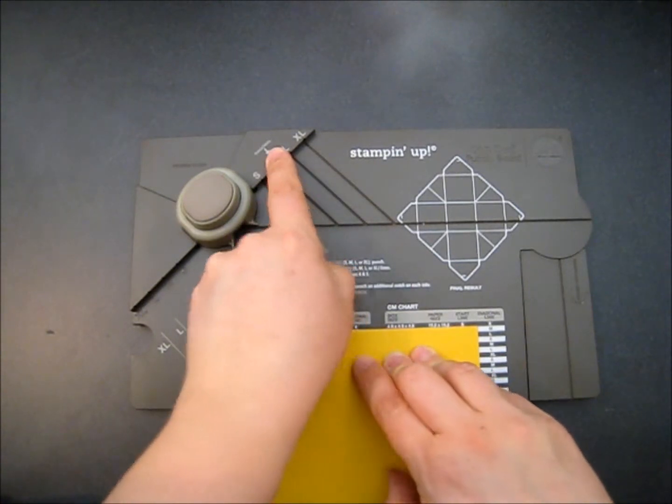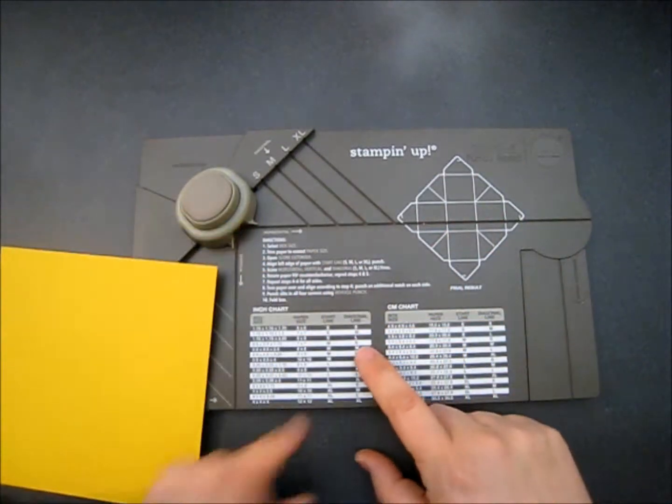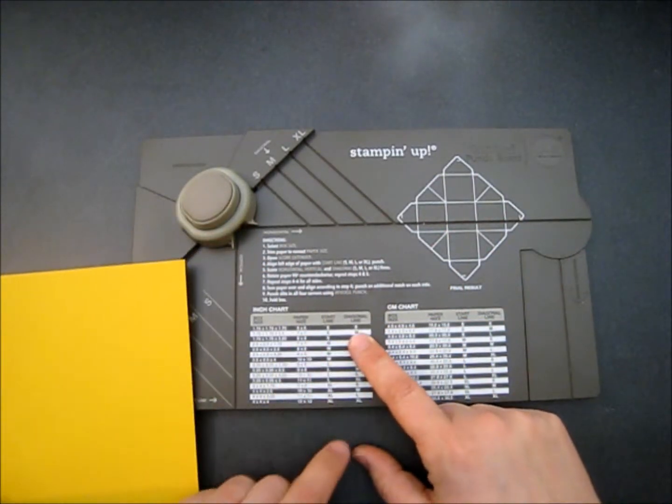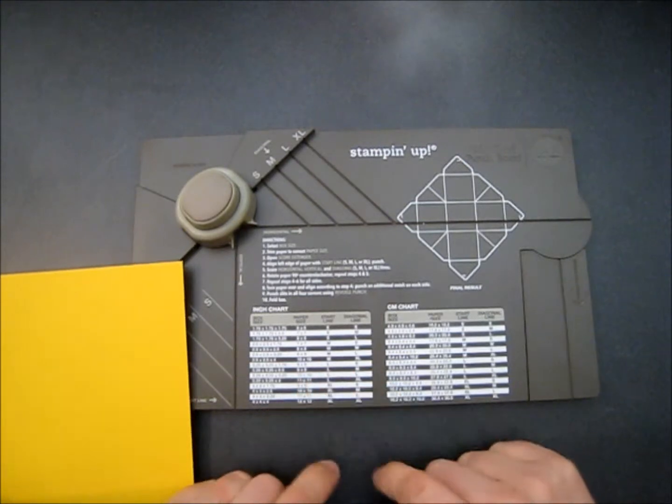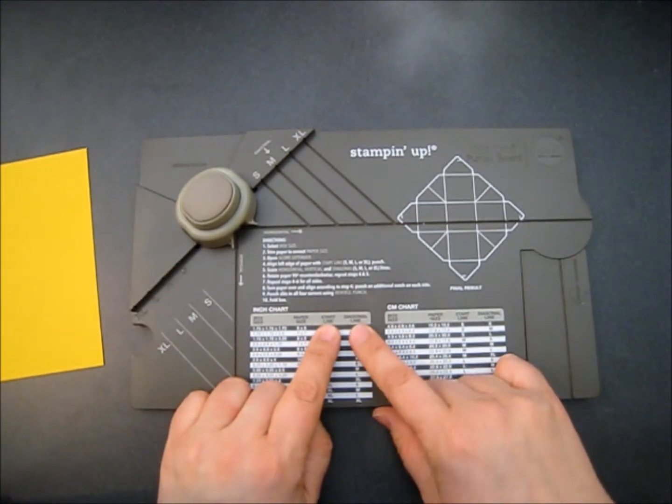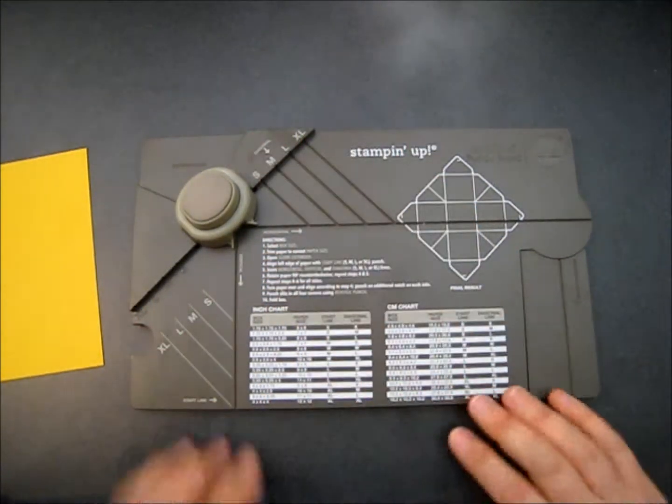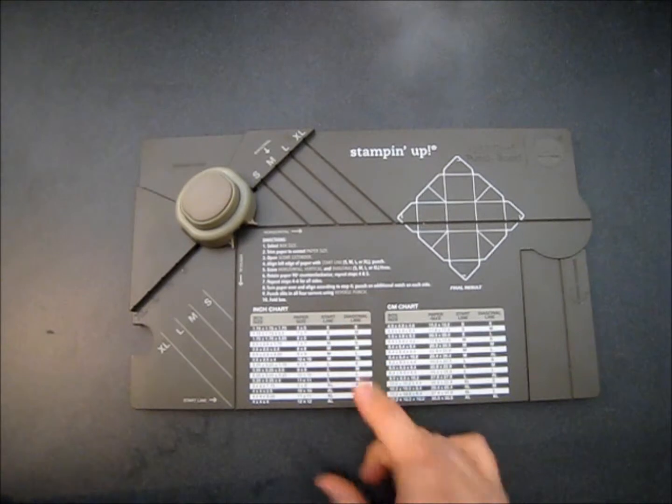And then up here, you're going to see diagonal line, which is also small. That's not true for every one of the boxes. Here, it's a small and a medium. Here, it's a large and a medium. So it'll vary depending. But what you're looking for are start line and diagonal line. Your start line is here and your diagonal line is up top. So we're going to need small and small.